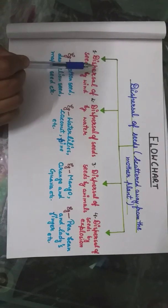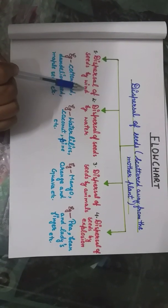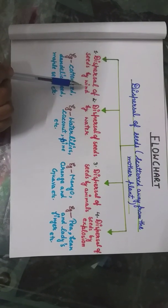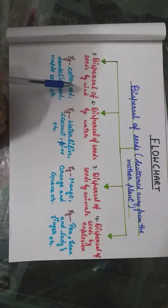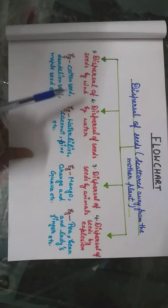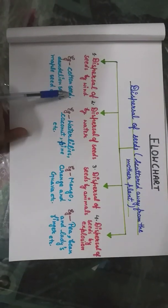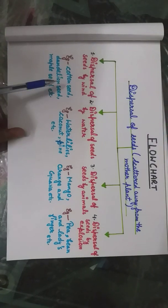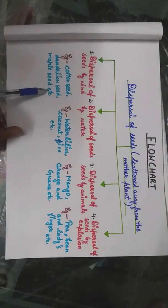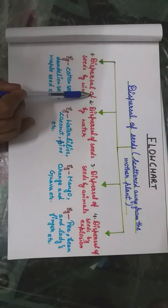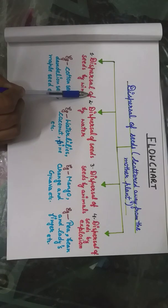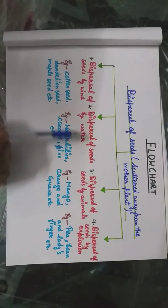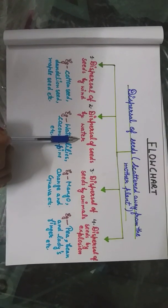It is divided into four parts. The first part is dispersal of seeds by wind. Which seeds are dispersed by wind? Examples are cotton seeds, dandelion seeds, and maple seeds. These are the examples of the dispersal of seeds by wind.